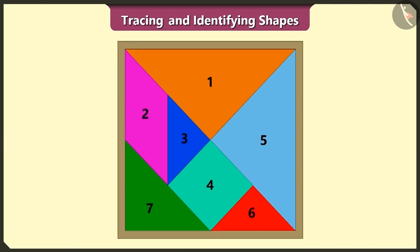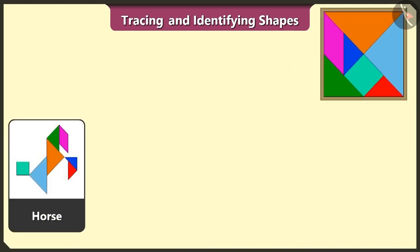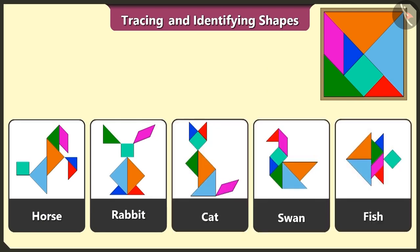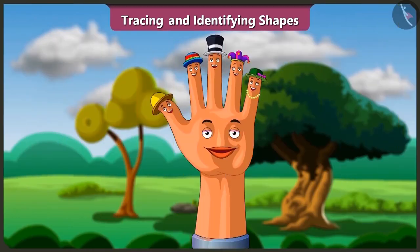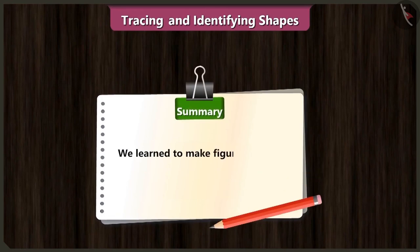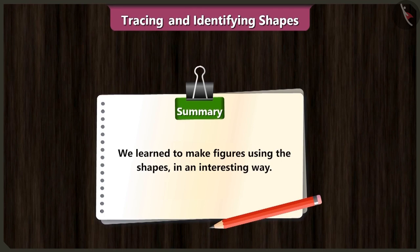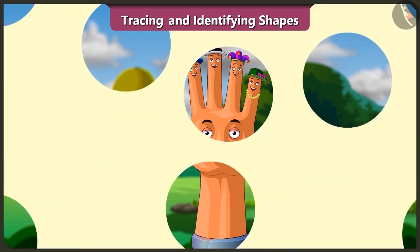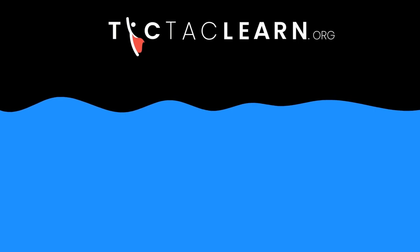We have finally created a horse, rabbit, cat, swan, and a fish using the seven shapes of the tangram. Friends, today we learned to make figures using the shapes of a tangram in an interesting way. In the next video, we will learn about lines and their different types.